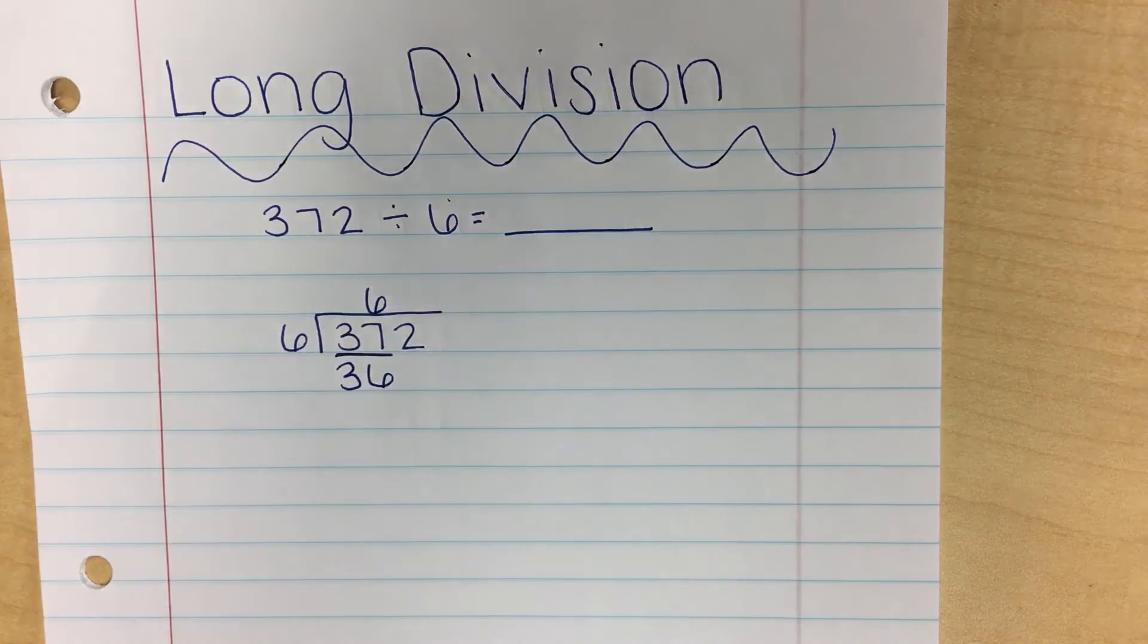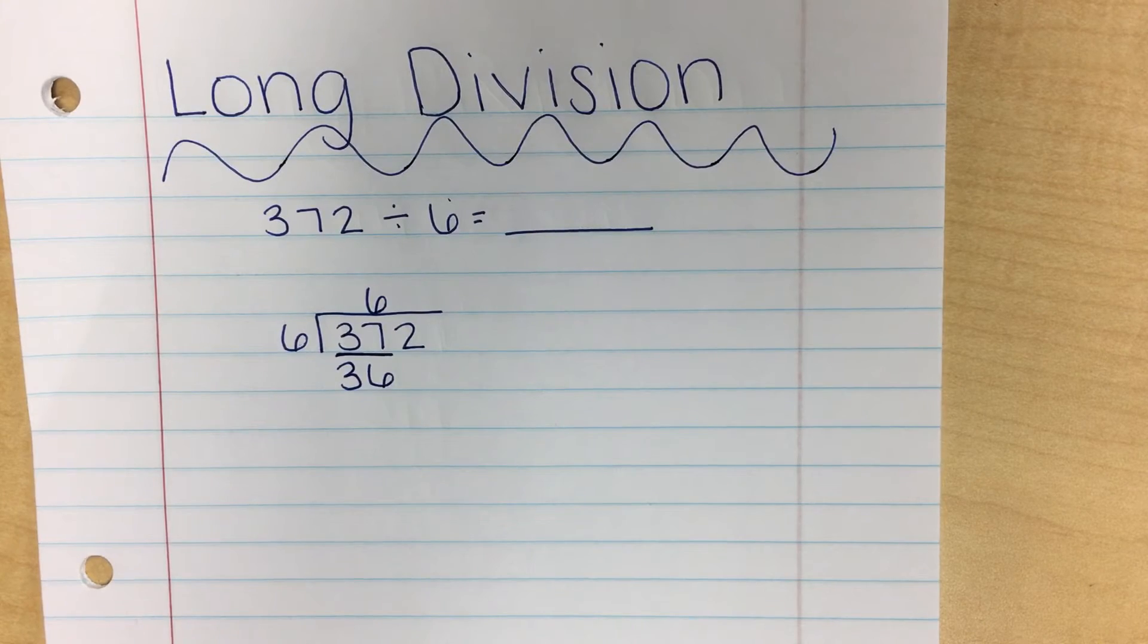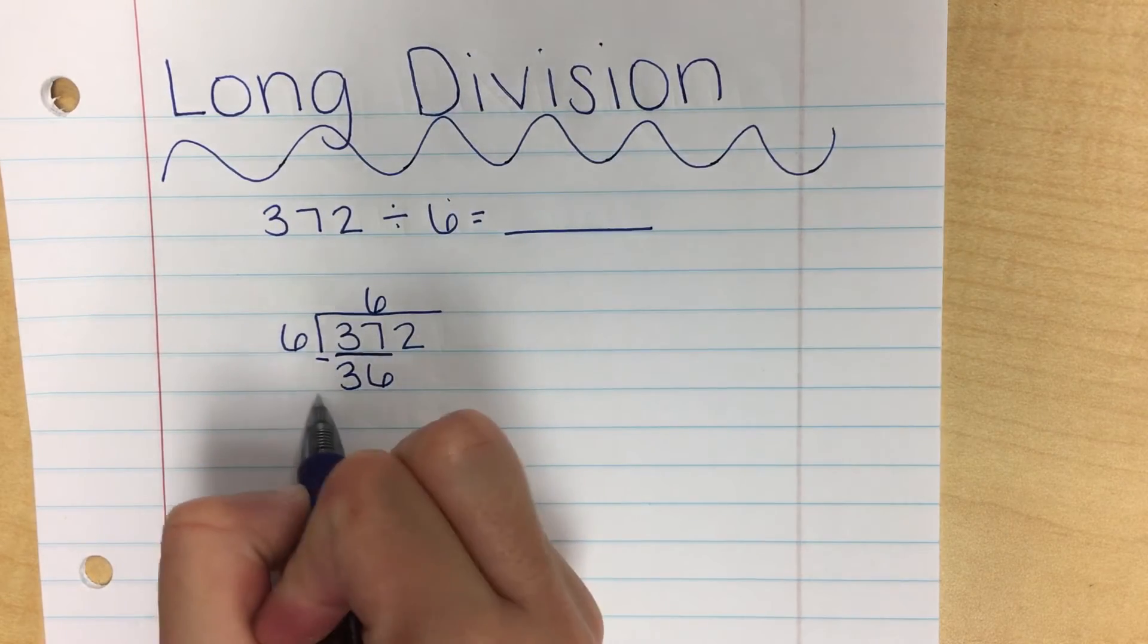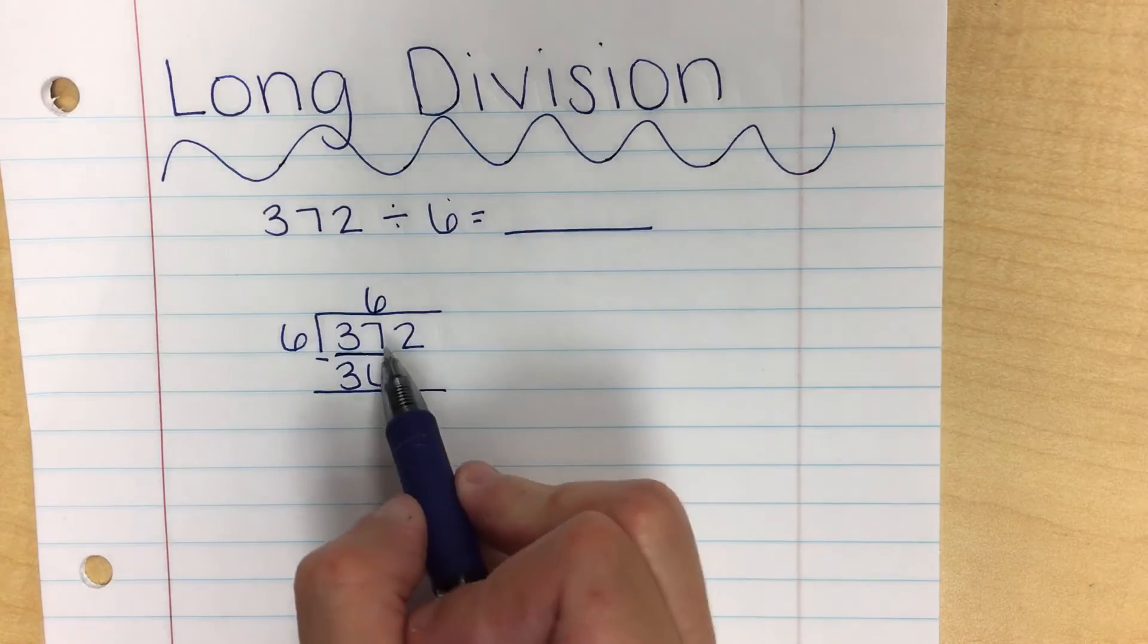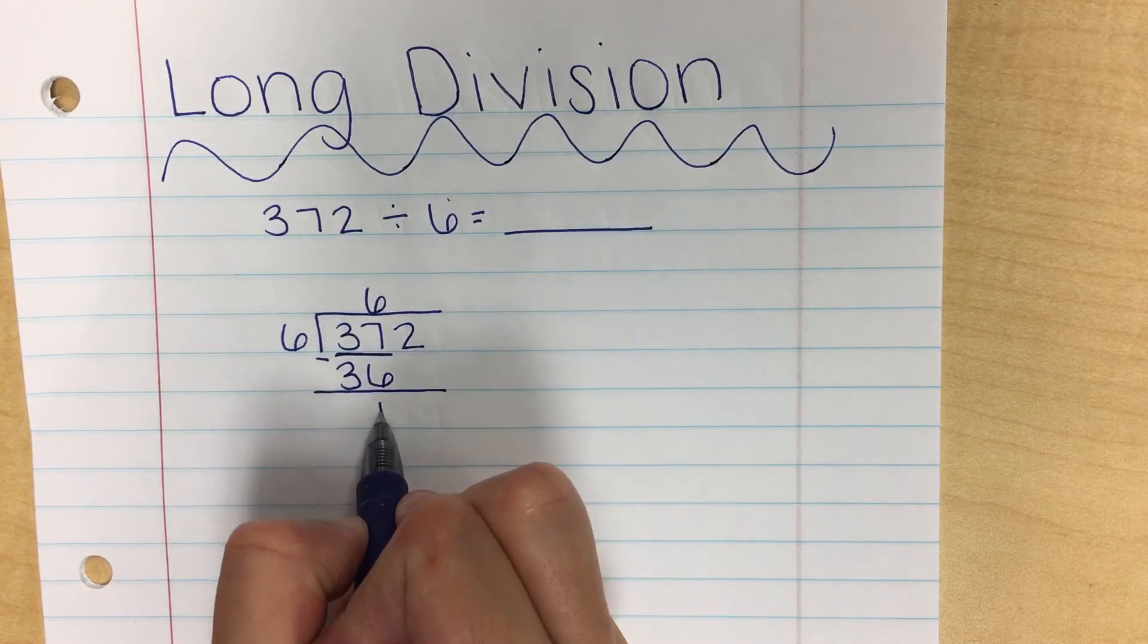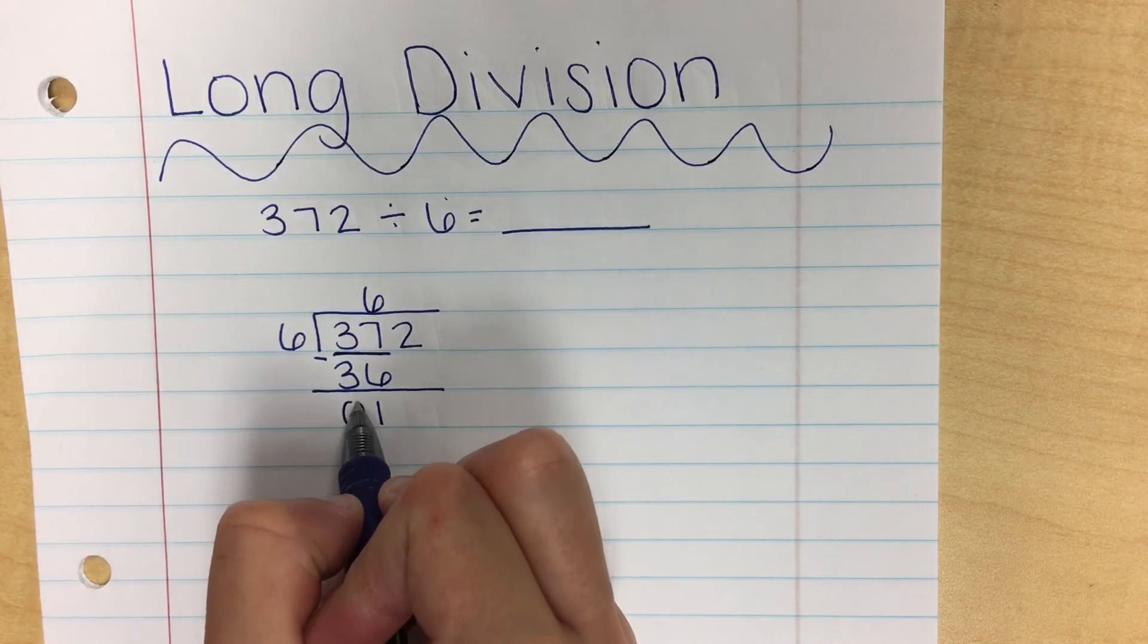So I'm going to write that right below the 37. My next step is to subtract. I'm doing 37 take away 36. 7 take away 6 is 1. 3 take away 3 is 0.